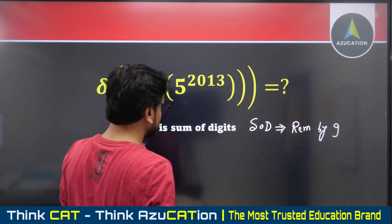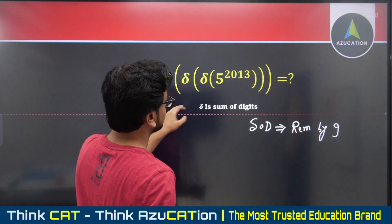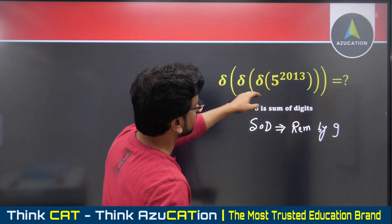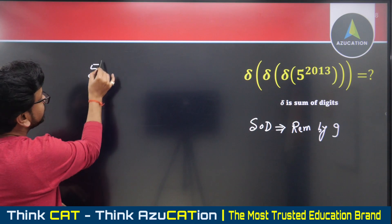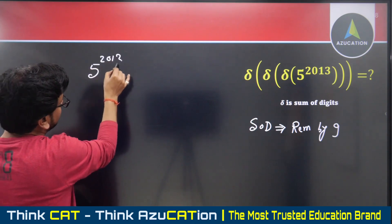So this question asks us to find what is the remainder when five raised to power 2013 is divided by nine.